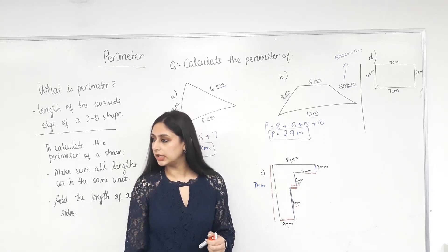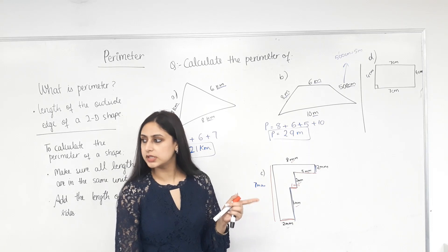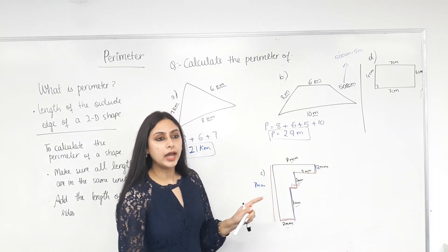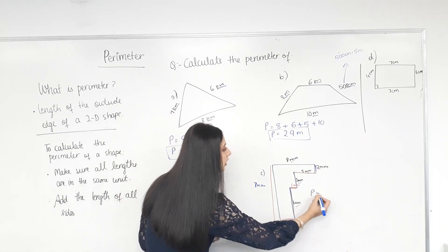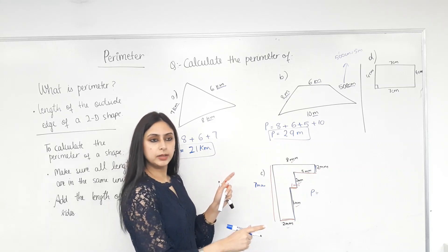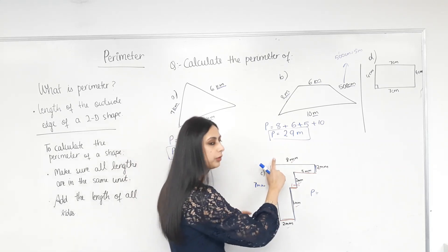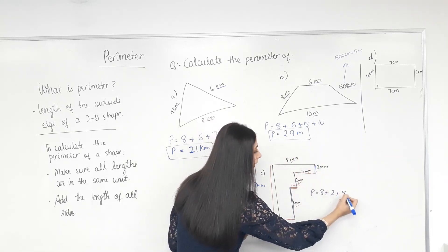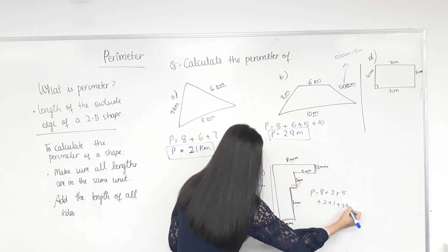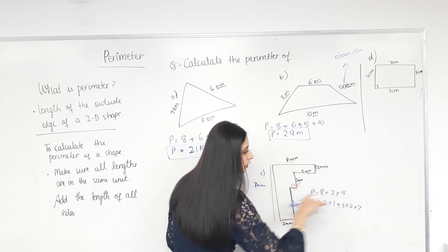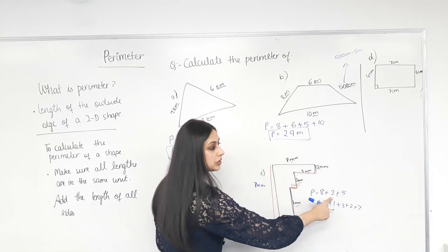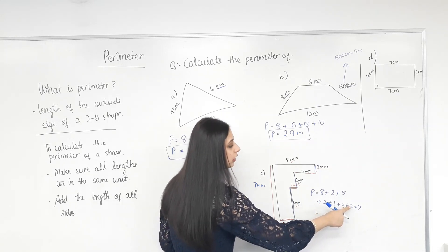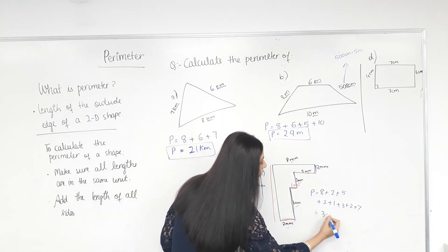So we know how to find the missing lengths. Are they all in the same units? Can we add now? Perimeter equals — start from one side and move in order so you don't lose any sides: 8 plus 2 plus 5 plus 2 plus 1 plus 3 plus 2 plus 7. Adding sequentially: 10, 15, 17, 18, 21, 23, 30, which gives us 32.